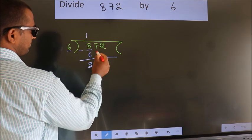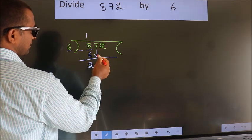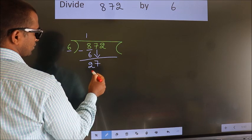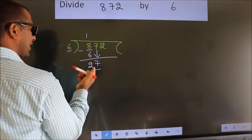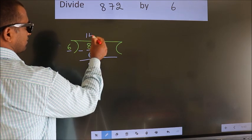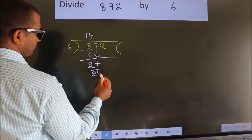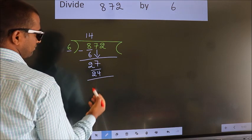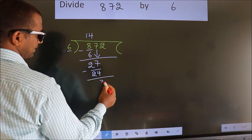After this, bring down the beside number. So 7 down. So 27. A number close to 27 in 6 table is 6 fours 24. Now we subtract. We get 3.